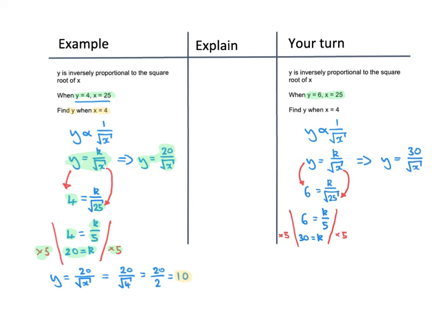We've been asked, if X is 4, what is Y? We therefore need to take this newly generated formula, Y equals 30 over the square root of X, and substitute in the value X equals 4. The square root of 4 is 2, so 30 divided by 2 gives us Y equals 15. When X equals 4, Y equals 15.